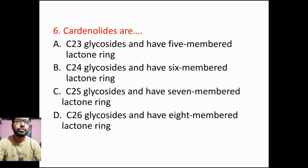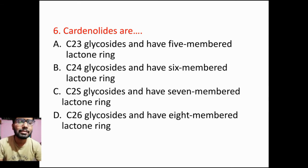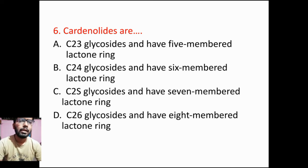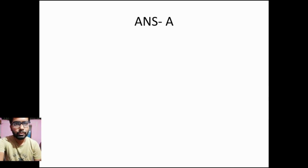Next question: cardenolides are — Option A: C23 glycosides and have five-member lactone ring; Option B: C24 glycosides and have six-member lactone ring; Option C: C25 glycosides and have seven-member lactone ring; Option D: C26 glycosides and have eight-member lactone ring. Cardenolides are C23 glycosides with a five-member lactone ring, so option A will be the right answer.